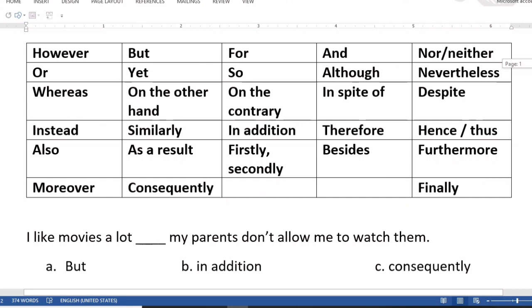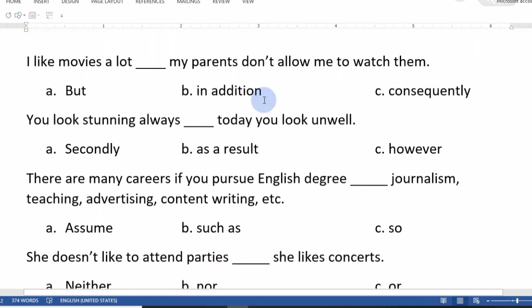Let's start. Number one: I like movies a lot, my parents don't allow me to watch them. The options are but, in addition, or consequently. But is the right answer, not in addition or consequently.